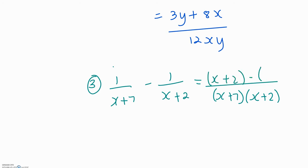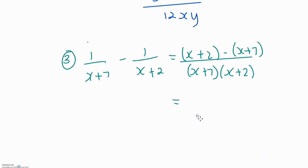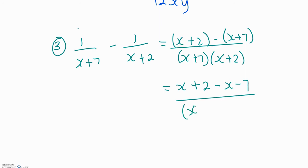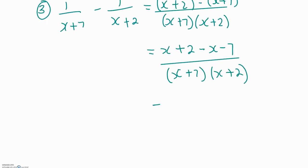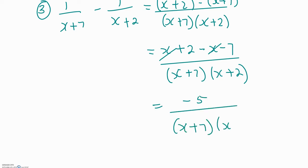Minus 1 times x plus 7. Expanding and simplifying — take out the brackets. For the second bracket, if you have a negative outside your bracket when you expand it, all the signs inside that bracket will change: negative times x gives you negative x, negative times 7 gives you negative 7. All over the common denominator — you don't need to expand the denominator, leave it as that. Now simplify the numerator: x minus x cancels out, 2 minus 7 gives you negative 5.